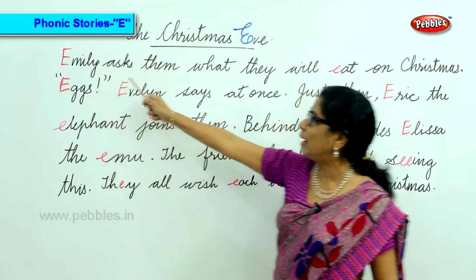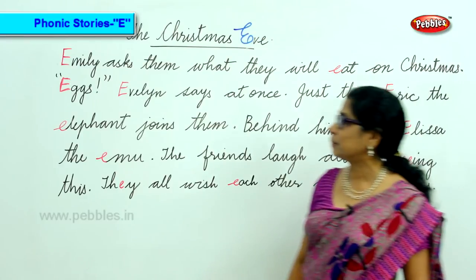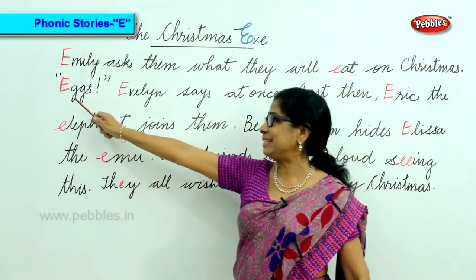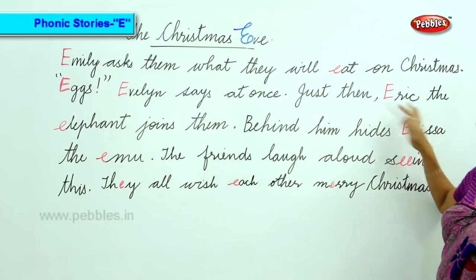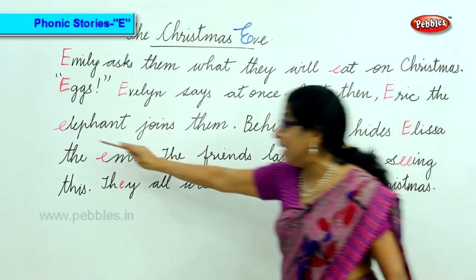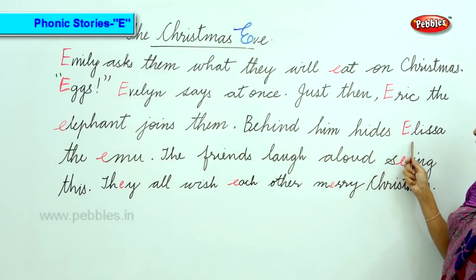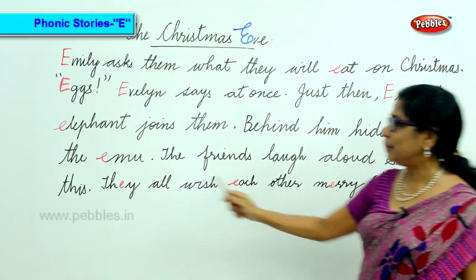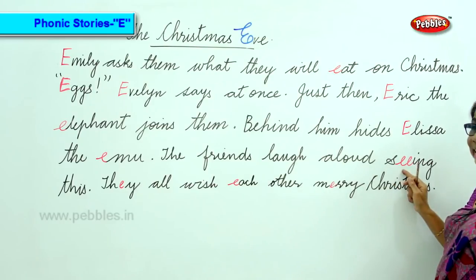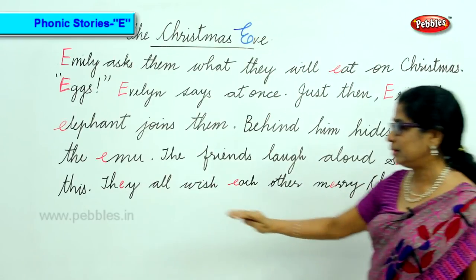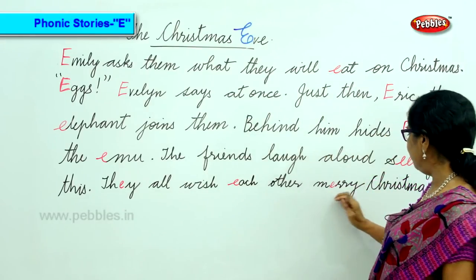They all wish each other Merry Christmas. Now look at all the words with E sound in the continuation: Emily asked what they will eat on Christmas — eggs, Evelyn says. Just then Eric the elephant joins them. Behind them hides Elsa the emu. The friends laugh aloud seeing this. They all wish each other Merry Christmas.